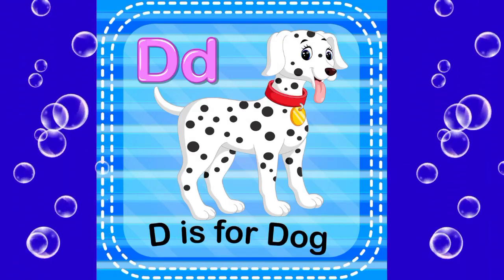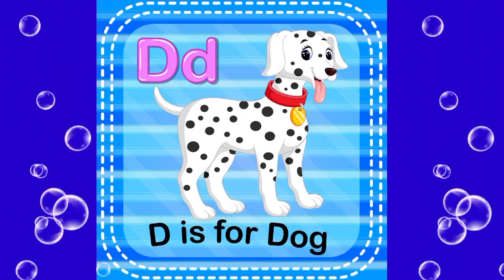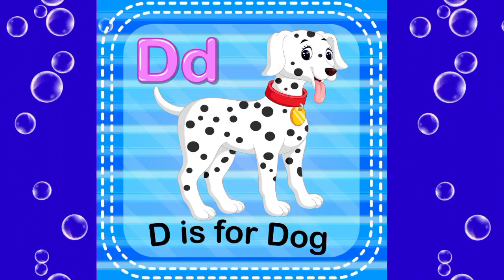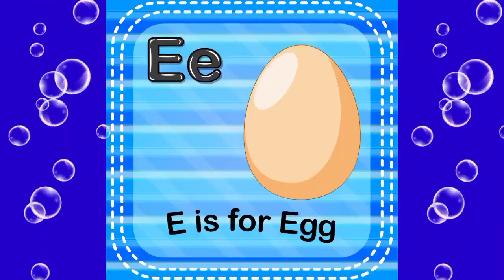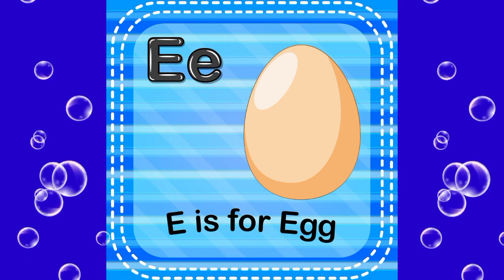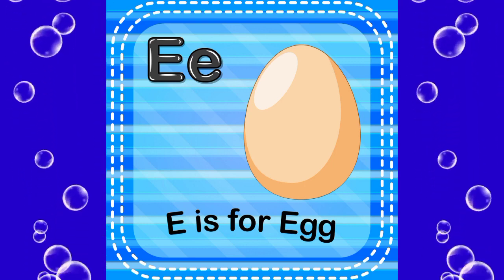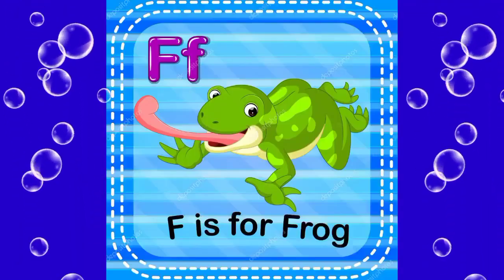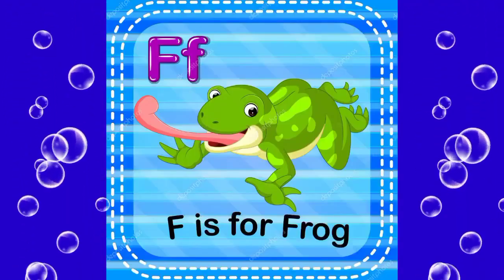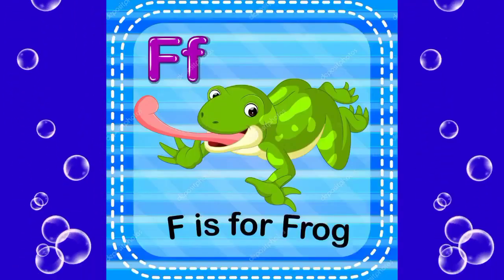D is for duck. E is for egg. F is for frog.